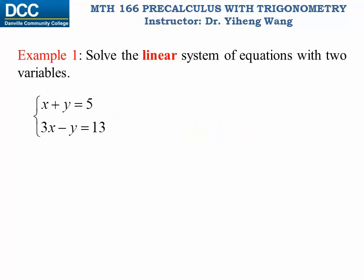Let's look at this example. We have a linear system of two equations with two variables x and y. To solve this system, we can use the method of substitution that we learned previously. However, if you look at the coefficients of y in both equations, you will notice that the coefficients of y in both equations only differ by the sign.